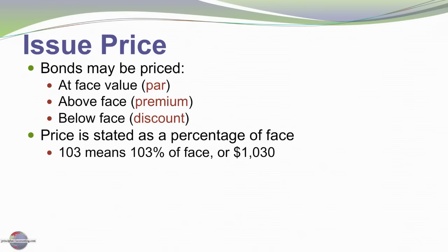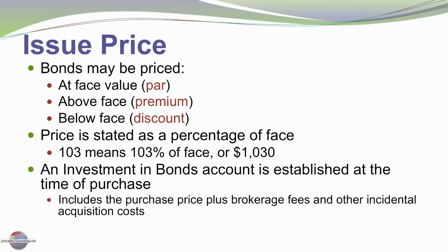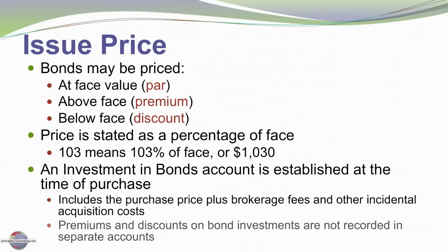Price is stated as a percentage of face. 103 means 103% of face value, or for a $1,000 bond, the price would be $1,030. An investment in bond account is established at the time of purchase. It includes the purchase price of the bonds plus the transaction costs. Any premiums or discounts on those bonds are included in the carrying value of the investment in bonds account.